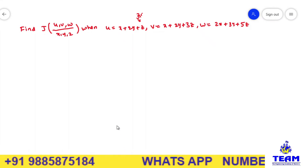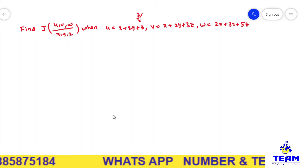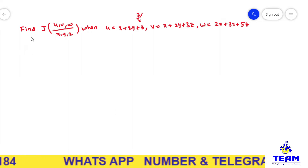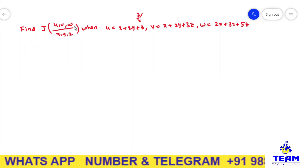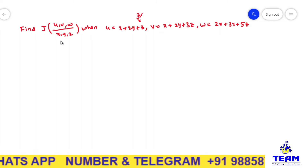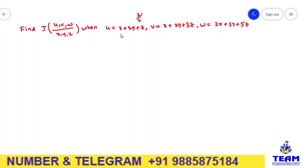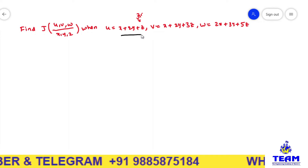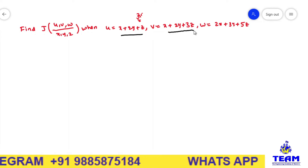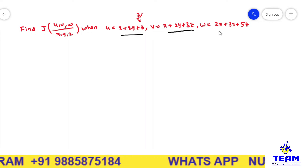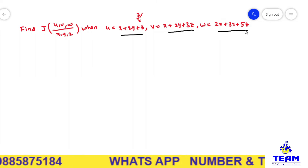Hi friends, in this video we are solving a problem on Jacobian. The given problem is: find the Jacobian of u, v, w with respect to x, y, z, when u is equal to x plus 2y plus z, v is equal to x plus 2y plus 3z, and w is equal to 2x plus 3y plus 5z.